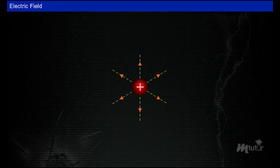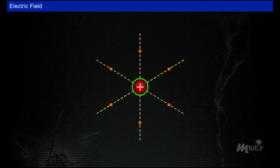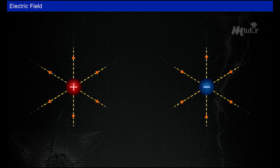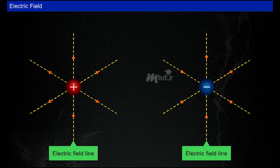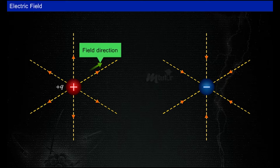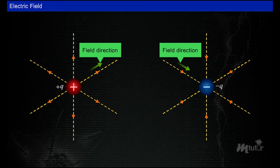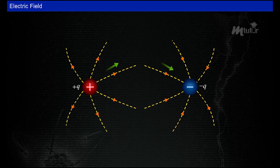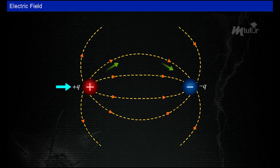An electric field is a field or space around a charged particle where its force can be experienced by any other charged particle. Electric field lines represent the field around charges. For a positive charge, the lines of force come out of the charge; for a negative charge, the lines come into the charge. The lines of force between two equal charges of opposite sign (+q and −q) are curved and directed from the positive charge to the negative charge.